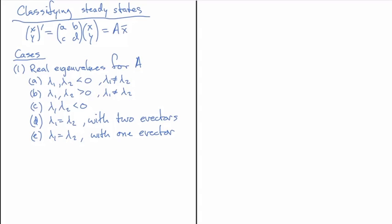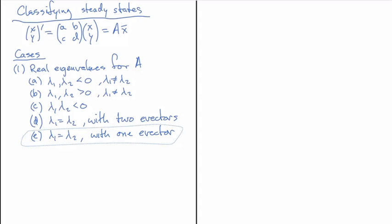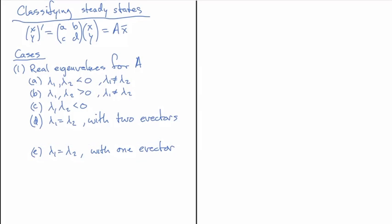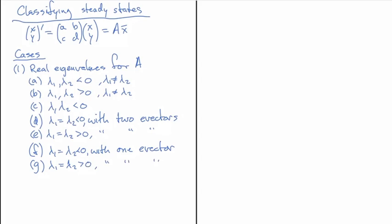For each of those two repeated-eigenvalue sub-cases, we can have the eigenvalues both negative or both positive. So case D: repeated eigenvalues both negative, two eigenvectors. Case E: repeated eigenvalues both positive, two eigenvectors. Case F: repeated eigenvalues both negative, one eigenvector. Case G: repeated eigenvalues both positive, one eigenvector. Then case H: one lambda negative and the other equal to zero. And case I: lambda 1 positive and lambda 2 equal to zero.